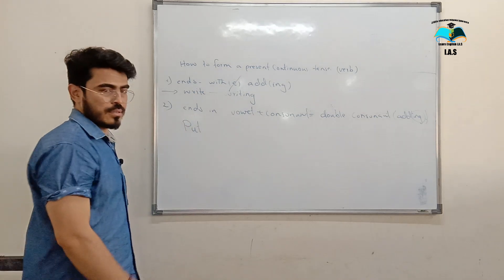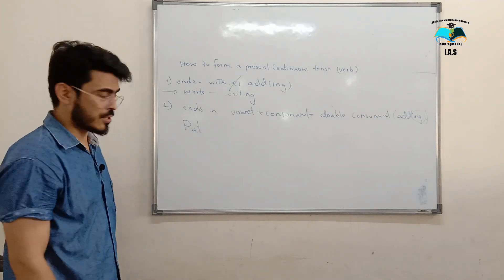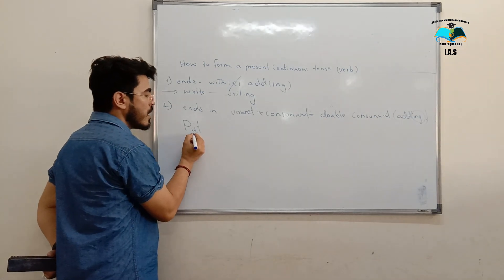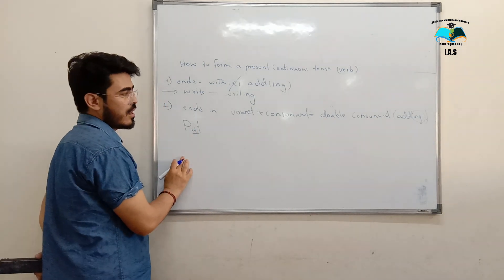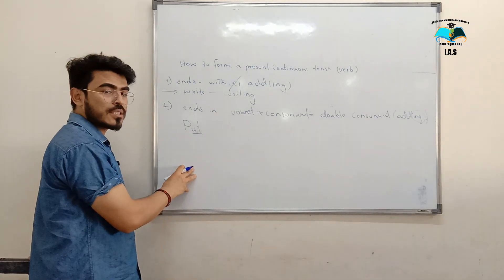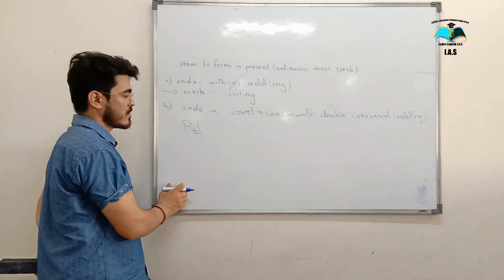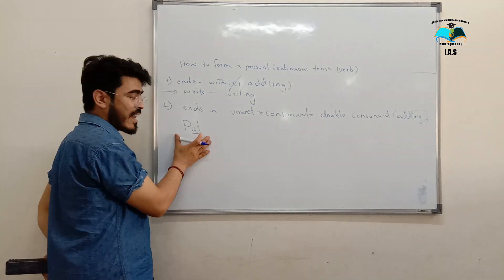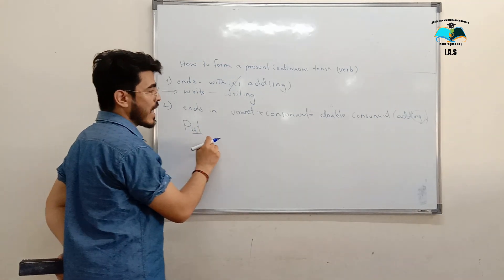Suppose this is the verb 'put.' There is a vowel plus consonant. Now if I want to add ING to 'put,' what I have to do?